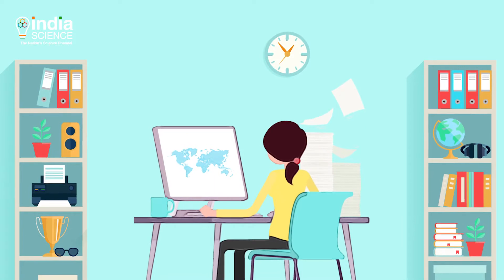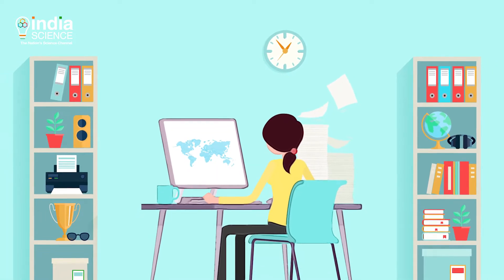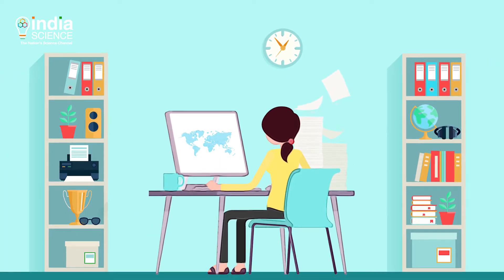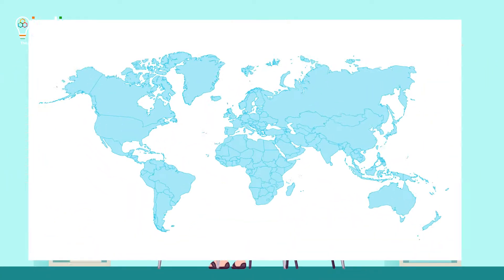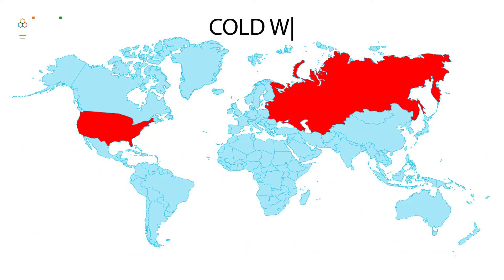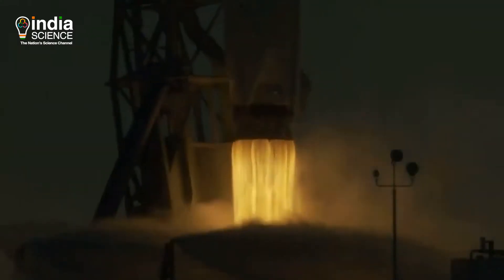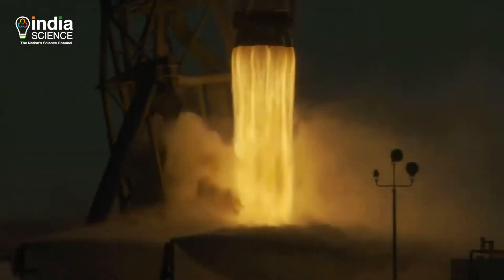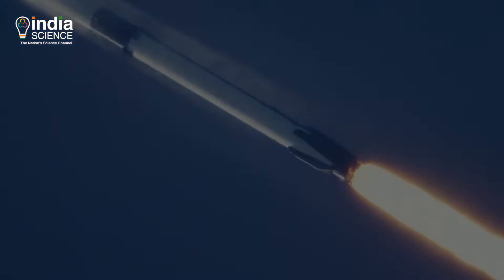In this episode of Explained, we take you through a virtual journey, starting from the Cold War, which gave birth to the internet, to the future of satellite internet.